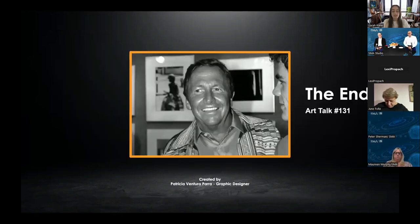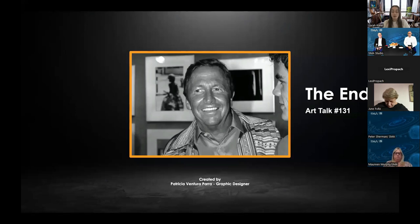Rauschenberg believed that art was a catalyst for social change. In the early 1970s, he actually lobbied the U.S. Congress to pass a bill that would compensate artists when their work is resold on the secondary market. His efforts paid off in 1976 when California Governor Jerry Brown signed the bill into law for the state of California. Rauschenberg received numerous awards during his nearly 60-year artistic career, among the most prominent being the International Grand Prize in Painting at the 32nd Venice Biennale in 1964 and the National Medal of Arts in 1993.